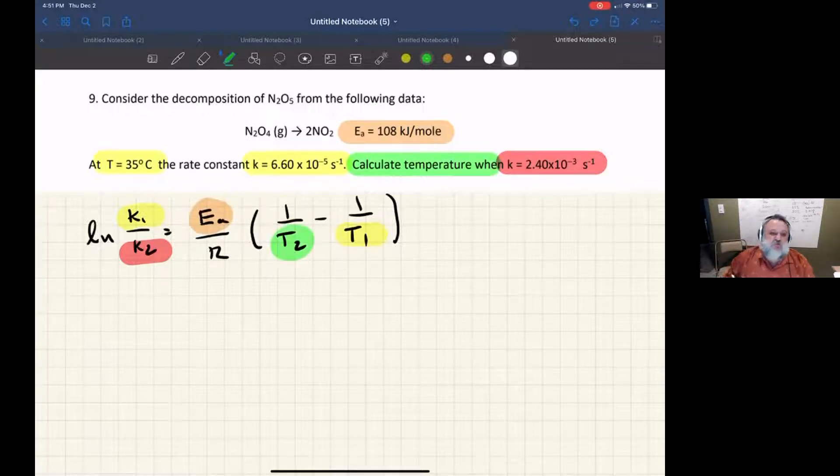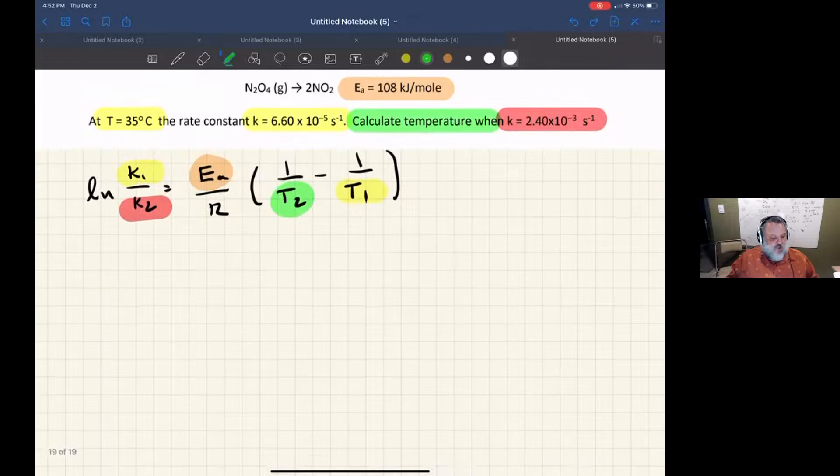Now, it doesn't actually matter what you call T1 and what you call K1 and what you call K2 and T2 as long as the temperature and the rate constant go together. We could have easily called the yellow ones K2 and the green ones K1. You're going to get the same answer either way. So let's go ahead and move forward with the problem.